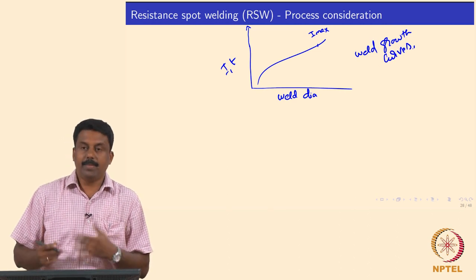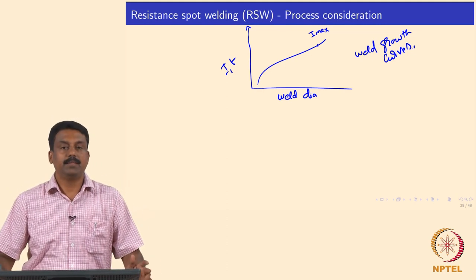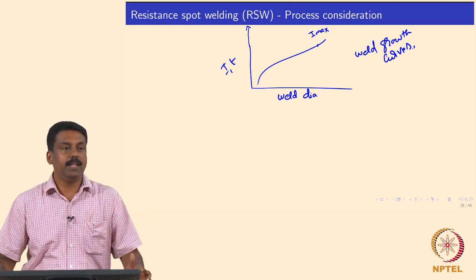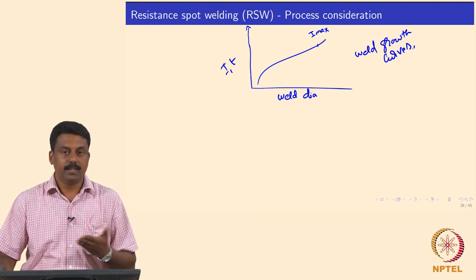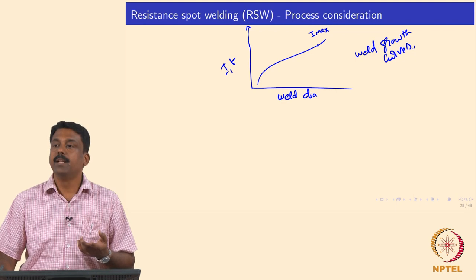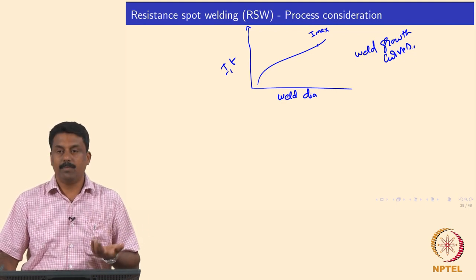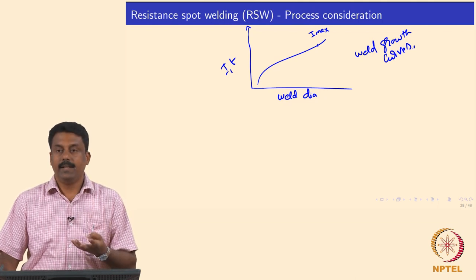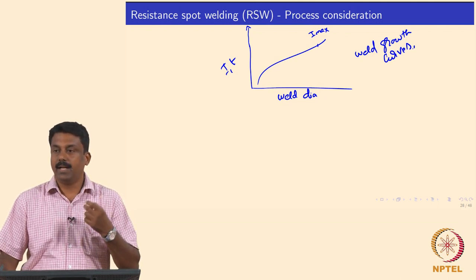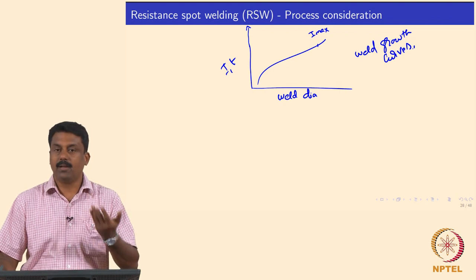The mass effect M is important because it determines the heat energy needed to form a given weld nugget diameter. M is related to specific heat C_p, mass, density, and volume. By identifying Q, we can also calculate the required current I and time T.